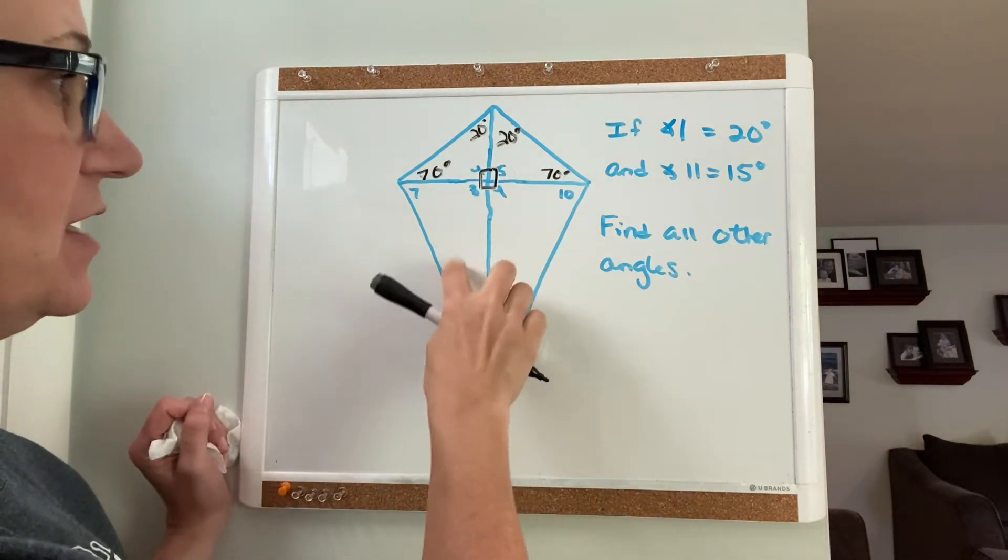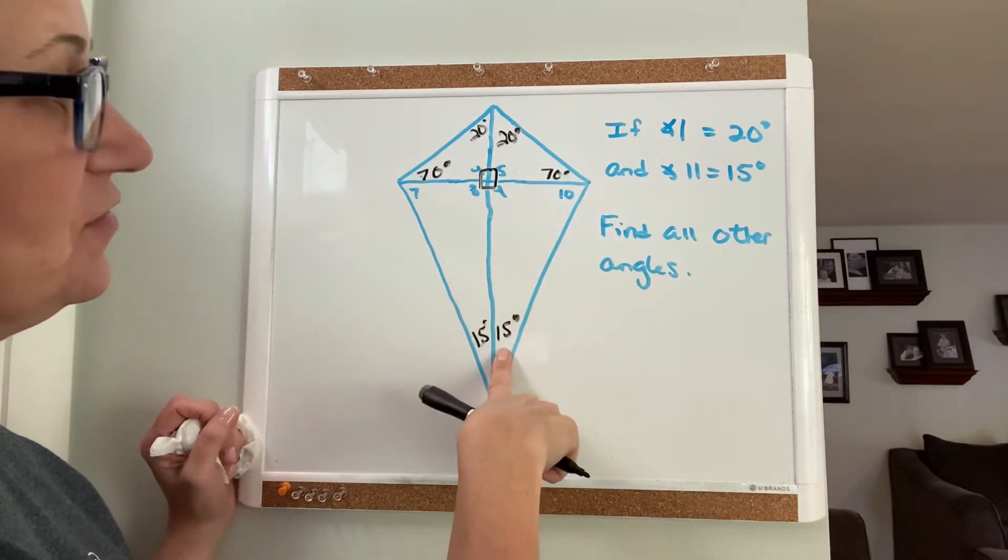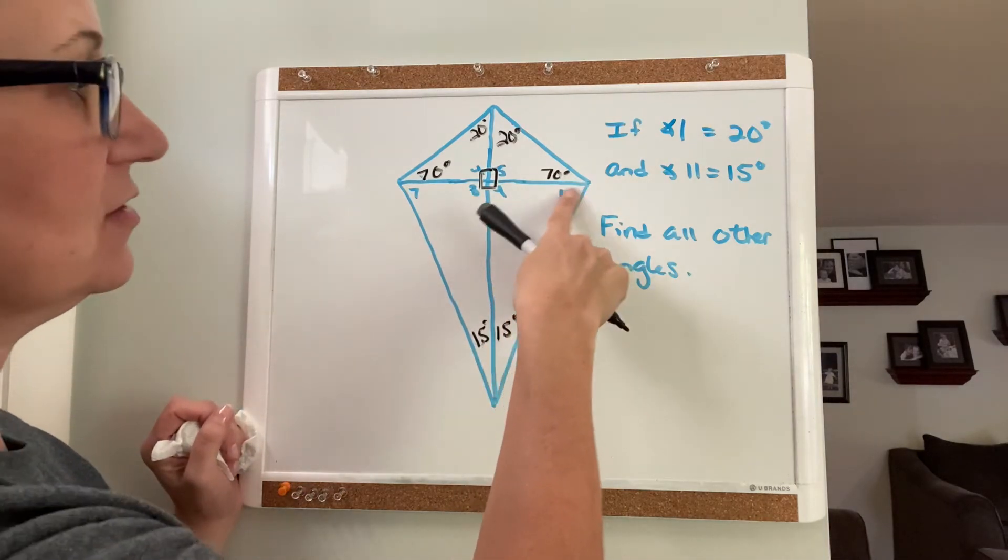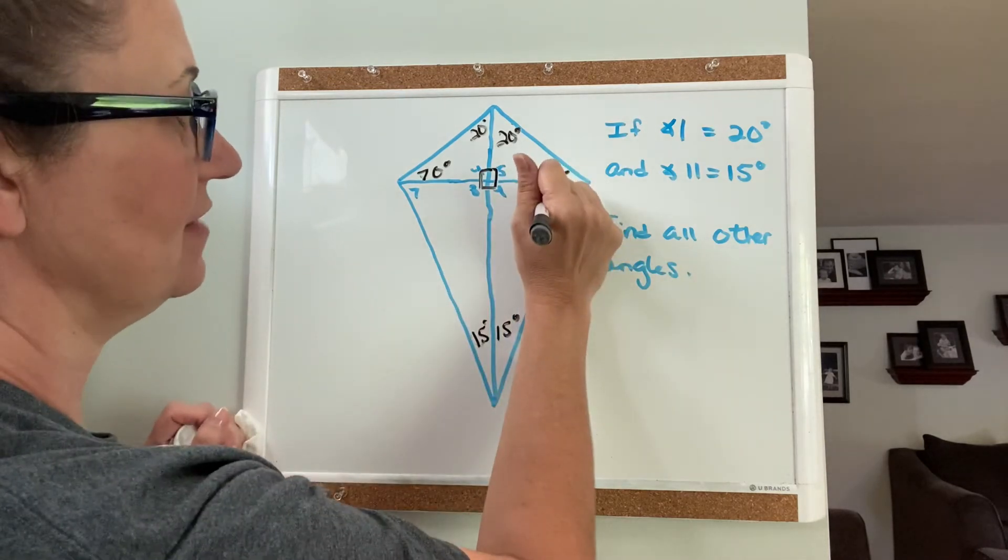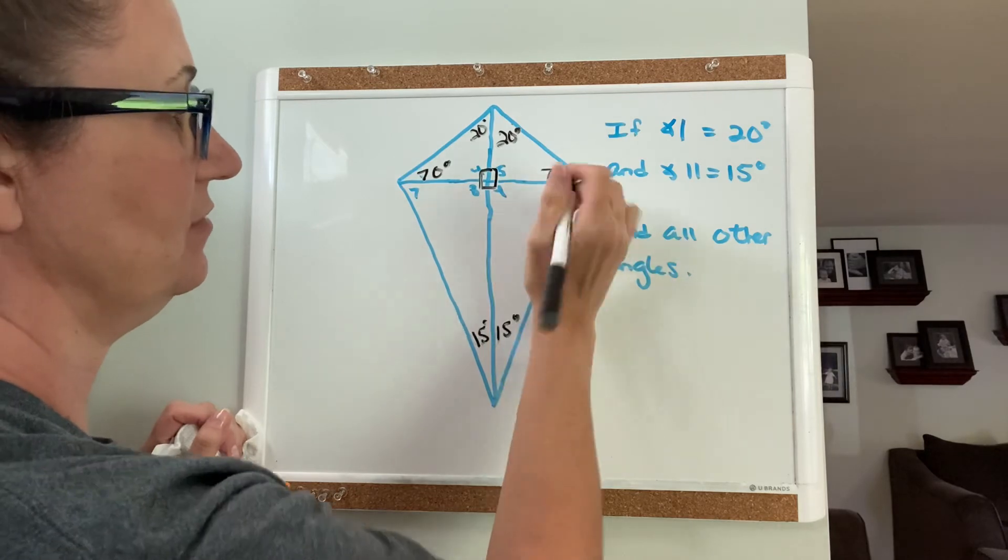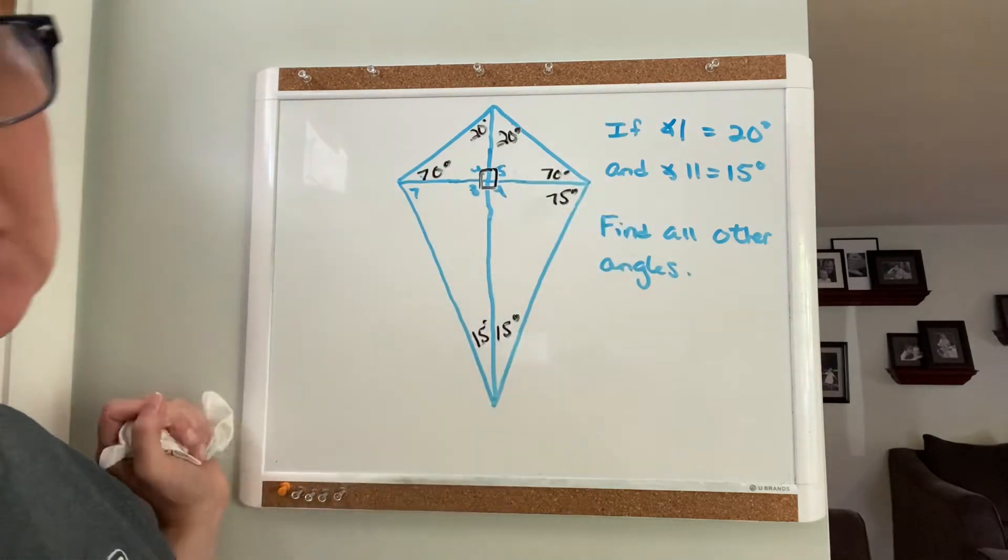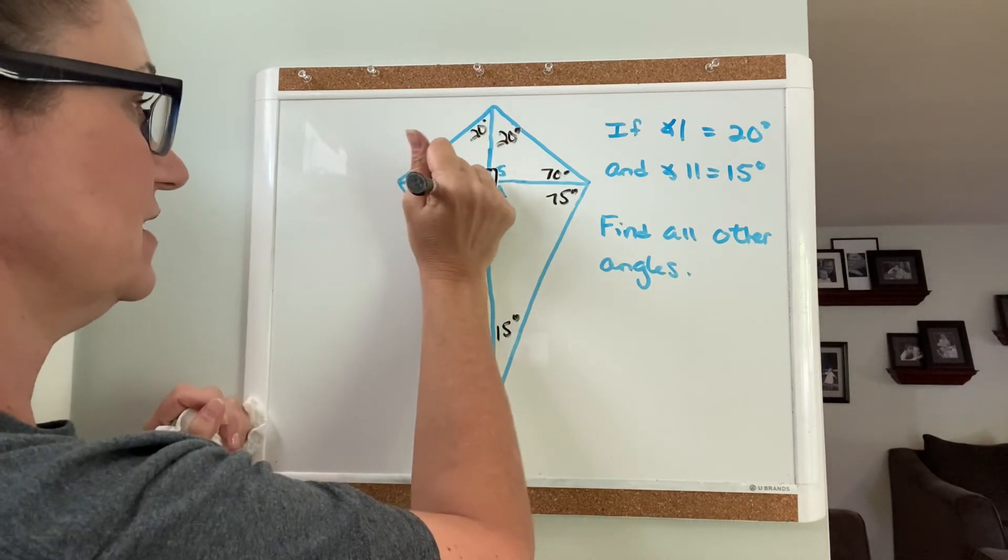These two triangles are also right triangles. So if this is 90 and this is 15, then angle 10 has to be 75 degrees, and so does angle 7.